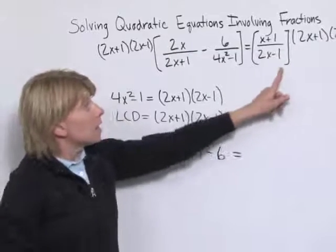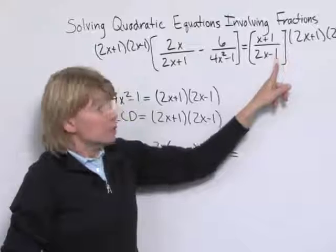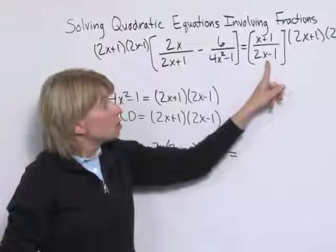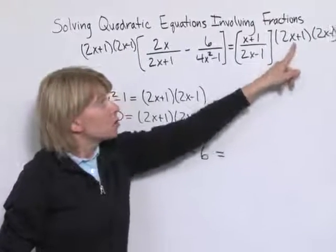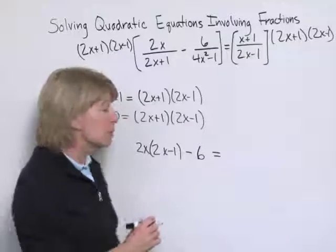On the right-hand side of the equation, multiplying the LCD times this fraction, the 2x minus 1 divides out, leaving us with 2x plus 1 times x plus 1.